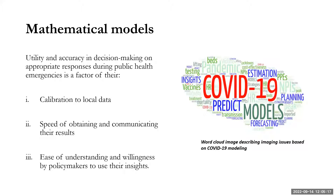Mathematical models' utility is critical for accuracy in decision making and appropriate response to public health interventions during emergencies. But this is really a factor of their calibration to local data, the speed of obtaining and communicating their results, ease of understanding, and willingness by policymakers to use their insights. Models are really useful when policymakers, mathematical modelers, and other scientists come together to derive questions that can be addressed by models.